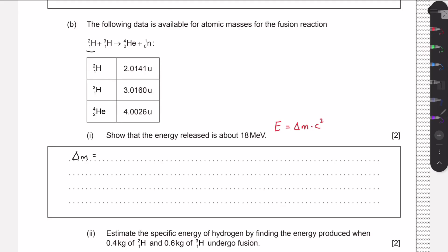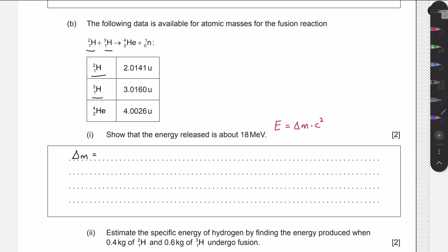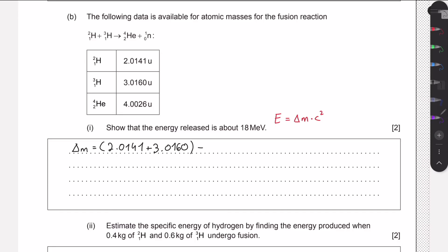On the reactant side we have 2.0141 plus 3.0160. From this we subtract the mass of the products: the helium which is 4.0026, and the neutron which is 1.008665 — this value is in the data booklet so the IB doesn't provide it here but expects you to check the data booklet. This gives us a mass defect of 0.018835 atomic mass units.